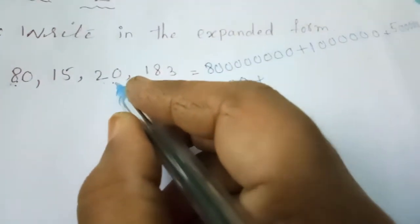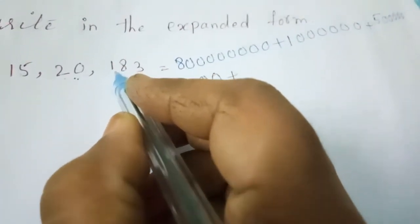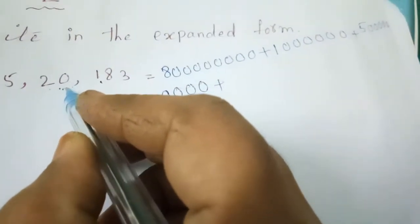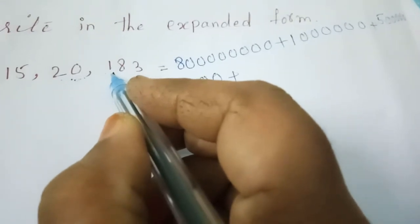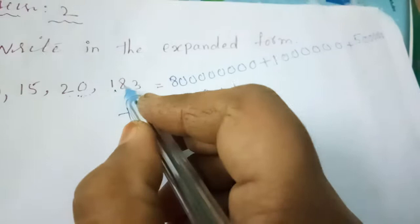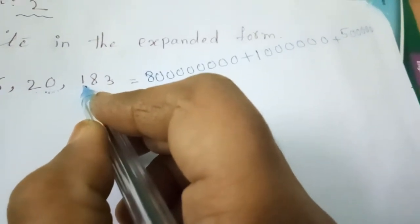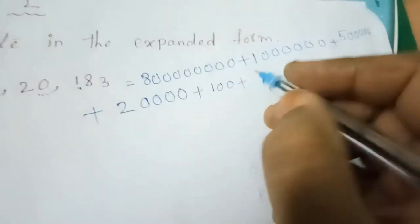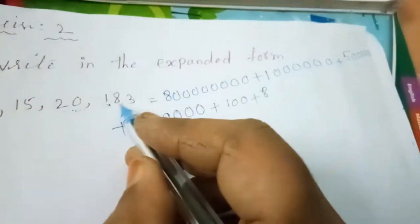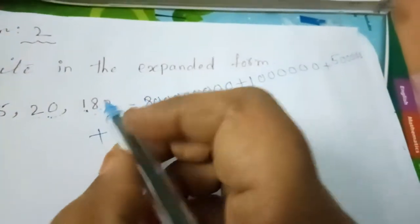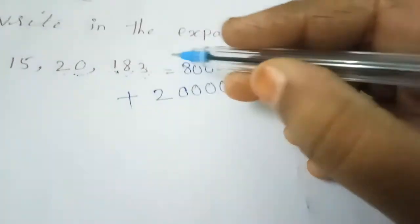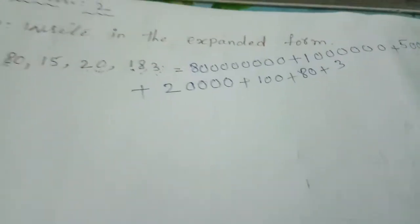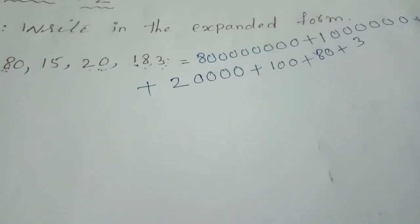The thousands place is zero, so we don't write that. The hundreds place is also zero, so we skip that too. Next digit is 1 in the hundreds place — write 1 followed by two zeros, then a plus mark. Next is 8 in the tens place — that is eighty, so write 8 followed by one zero. Finally, the last digit is 3 in the ones place — just write 3. That completes the expanded form for the first number.